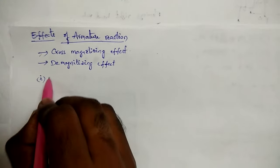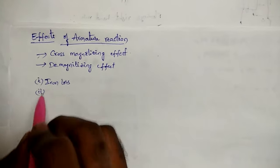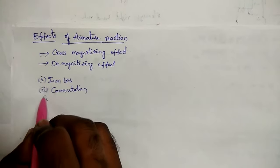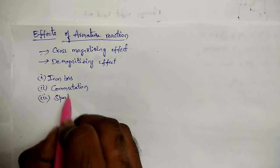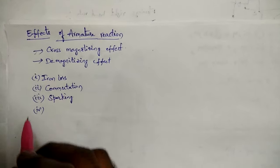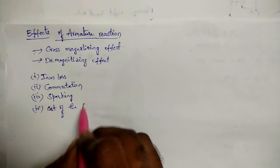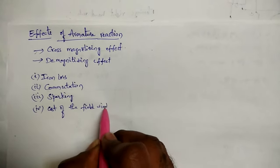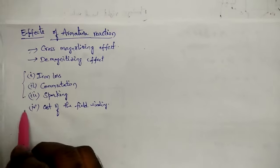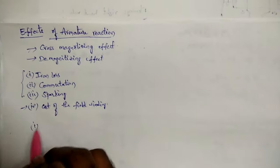Because of the cross-magnetizing effect, three things will happen: first, iron loss; second, poor commutation; and third, sparking — which also comes under commutation. The fourth effect occurs because of the demagnetizing effect, which leads to increased cost of the field winding. So these are the four effects of armature reaction.